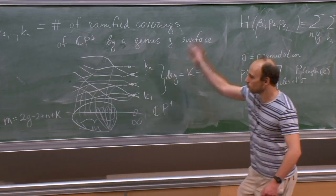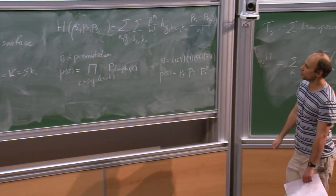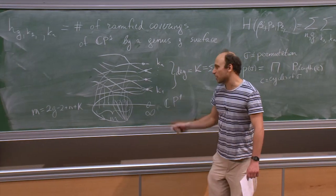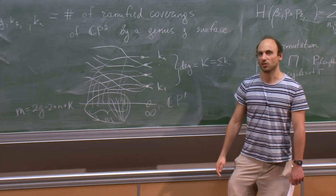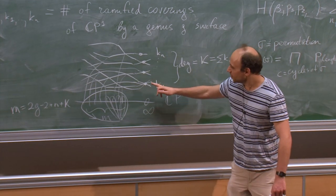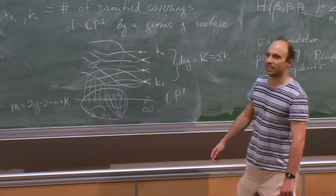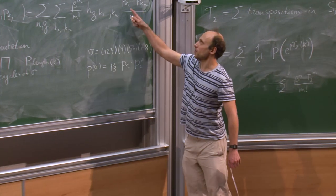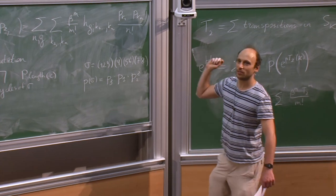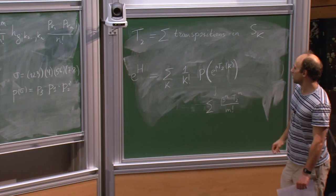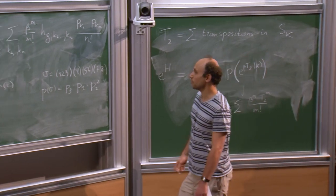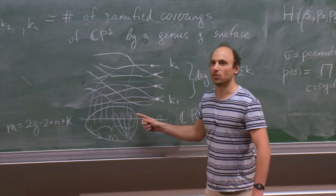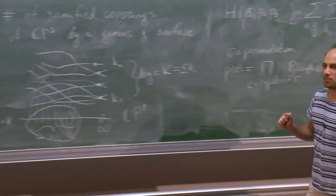I take the product of M transpositions in all possible ways — all choices of M transpositions. Then I look at the cycle structure of the permutation obtained as the product. My goal is to obtain the permutation with cycles of length k₁, k₂, …, kₙ. So in front of P_{k₁} · P_{k₂} · … · P_{kₙ}, I get exactly the number of ways of representing a permutation with these cycle lengths as a product of M transpositions, which is exactly the way to enumerate ramified coverings.